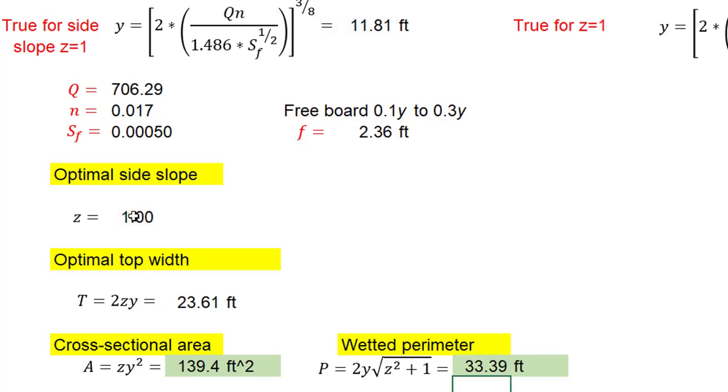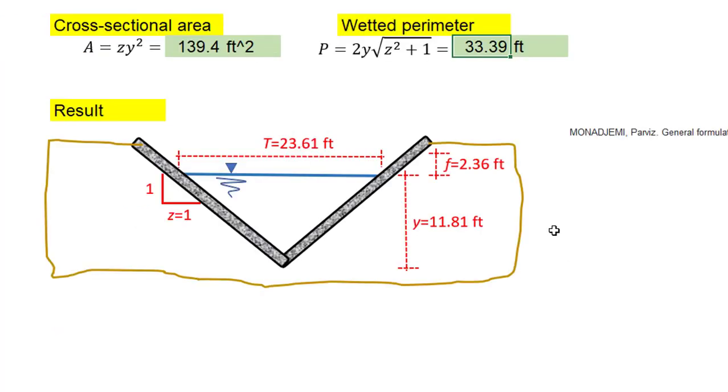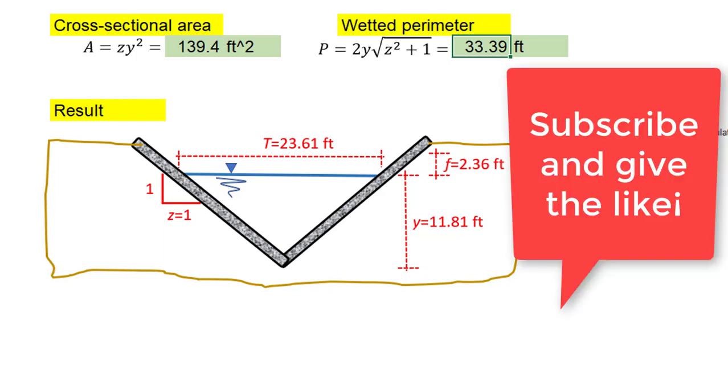The wetted perimeter equal to 33.59 feet. Result: the top width of the channel is equal to 23.61 feet, the water depth is equal to 11.81 feet, and the free board is equal to 2.36 feet, and the side slope that was a data equal to 1. Well we have finished. If you like it subscribe and give the like.